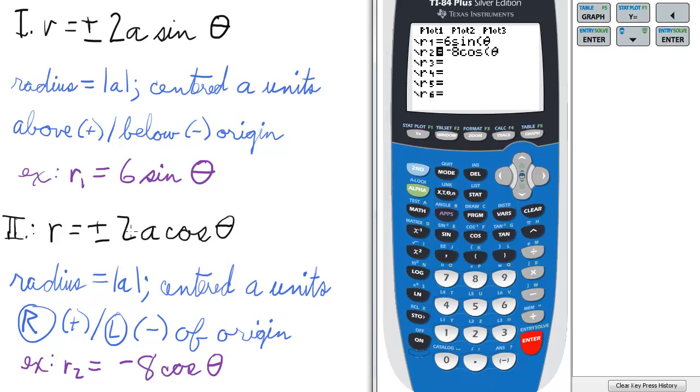Now, for the second type of polar equation of a circle, we have r equals plus or minus 2a cosine theta, where the radius is again the absolute value of a. It's centered a units to the right or left of origin, depending on whether a is positive or negative.